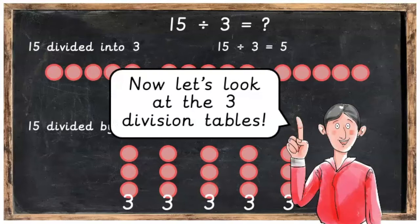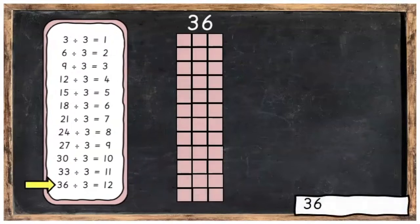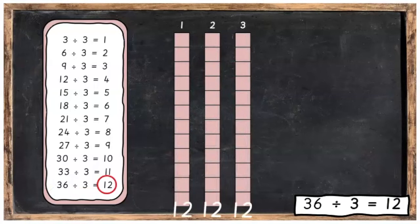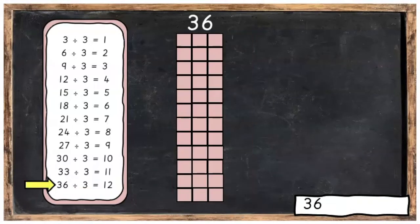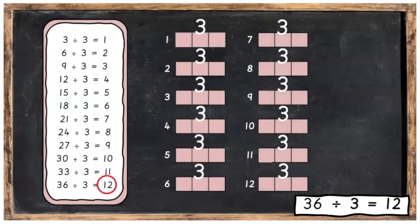Now let's look at the three division tables. We're going to start off with 36 divided into 3 equal parts — we'll get 12 in each part. The other way of saying it is 36 divided into 3's, and we'll get 12 groups of 3.